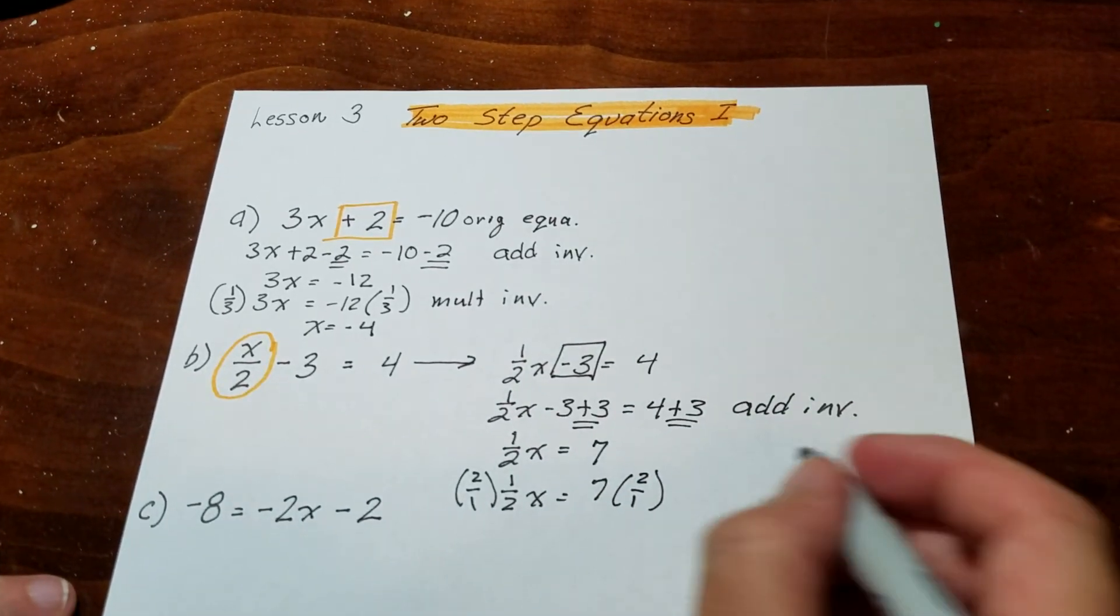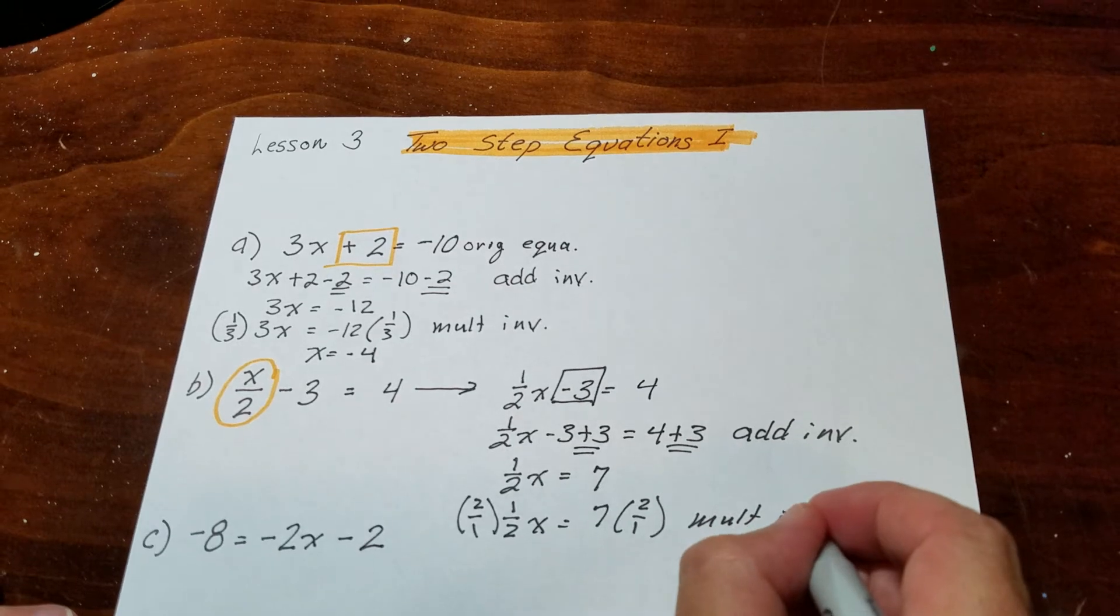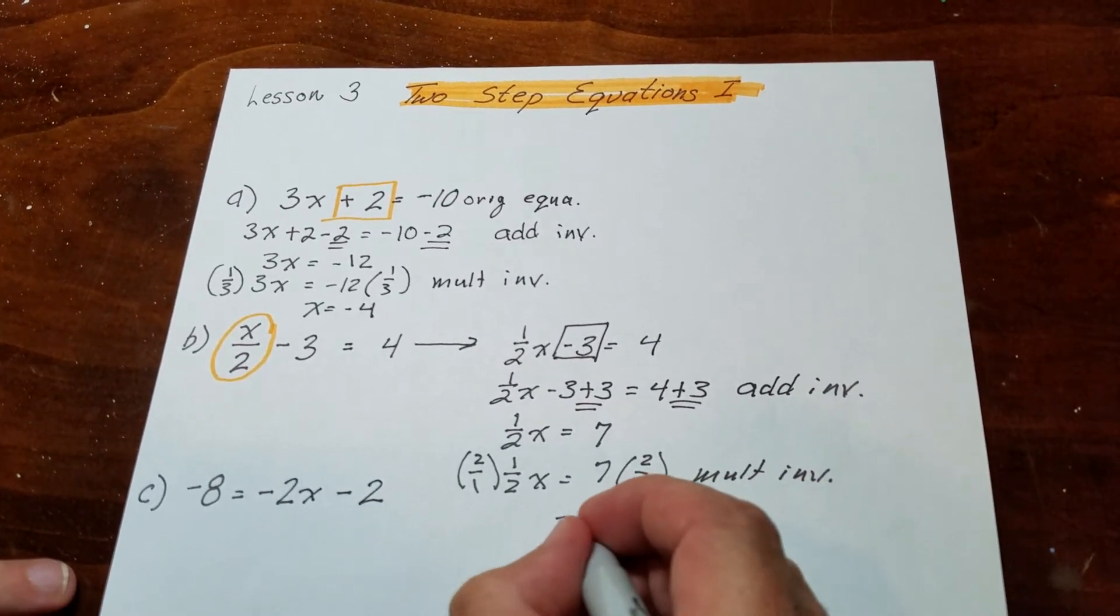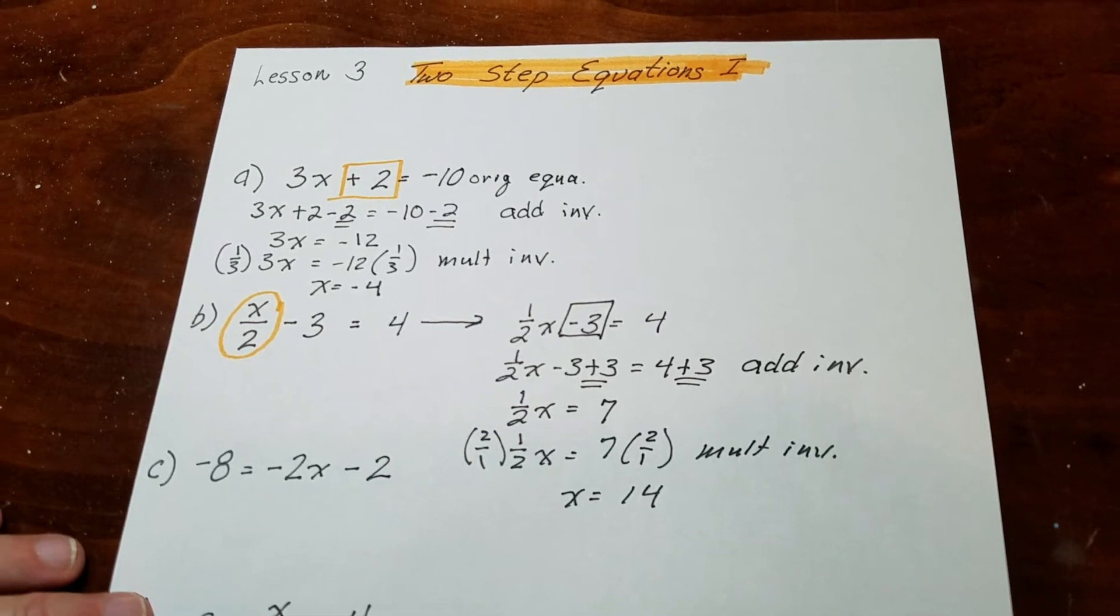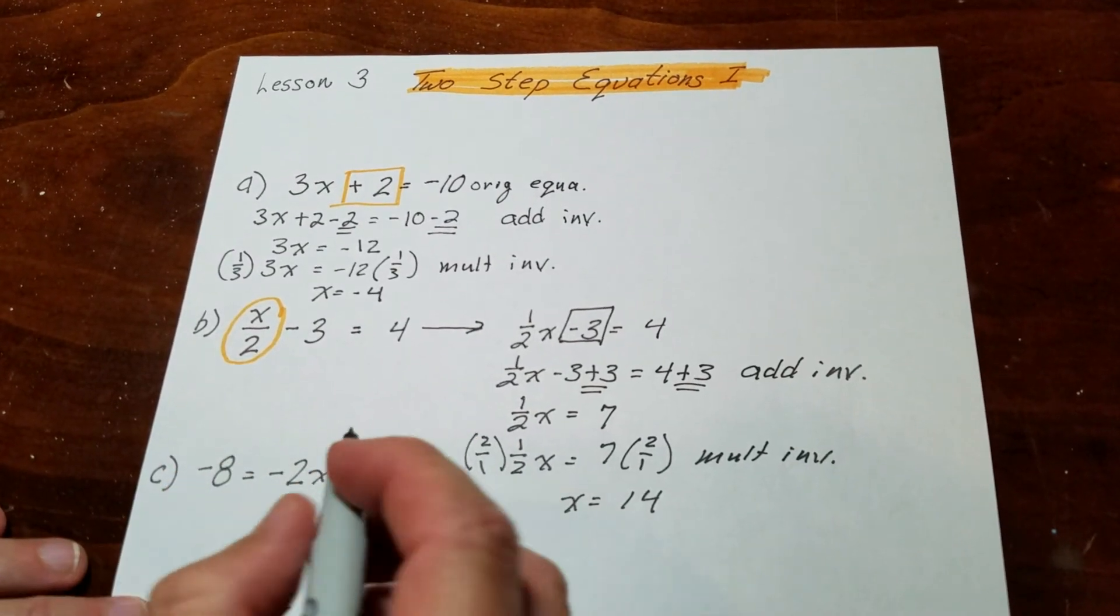So that's 2 over 1, which is basically 2, and x is equal to 14.